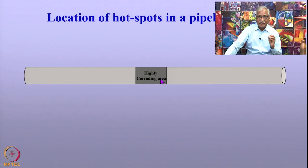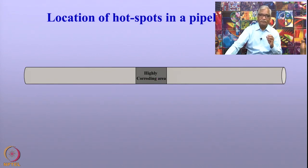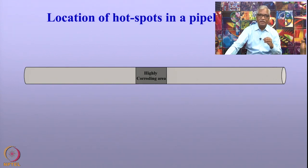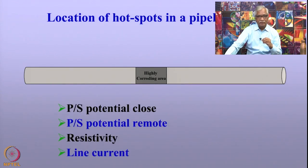The highly corroding areas are rendered as the anodes, and the other areas are rendered as cathodes. The current flows between the anode and the cathode — it leaves the anode, goes to the cathode, and flows through the pipeline. These are bare pipelines that are not cathodically protected. We can use three techniques — pipe-to-soil potential, resistivity, and line current measurements — to locate the segment of the pipeline experiencing severe corrosion.